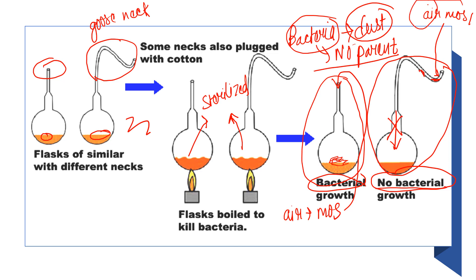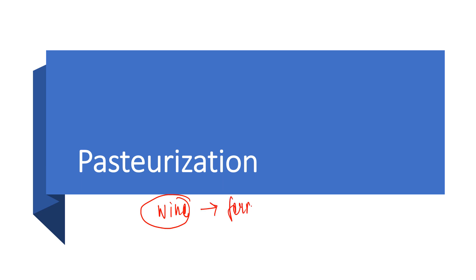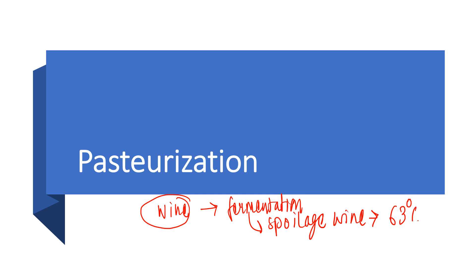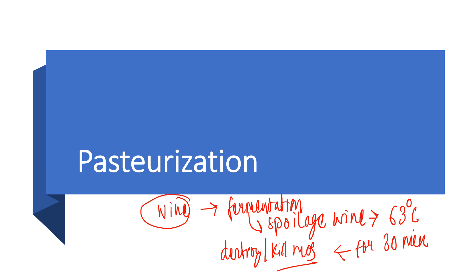The next contribution is pasteurization. At that time there was a major problem of wine spoilage. Pasteur worked in the fermentation of wine and to reduce spoilage, he developed a technique: if we heat any liquid at 63 degrees centigrade for 30 minutes, it will destroy or kill the microorganisms present in the wine or any kind of liquid. However, it is unable to destroy spore-forming bacteria.